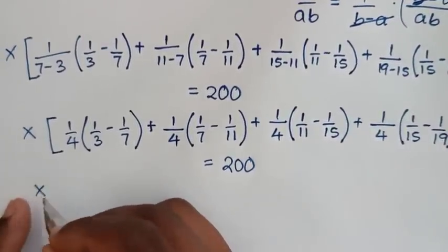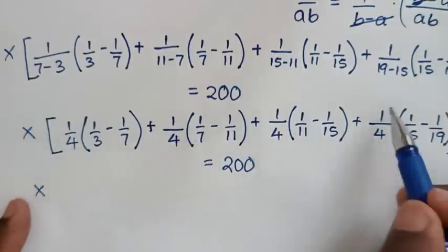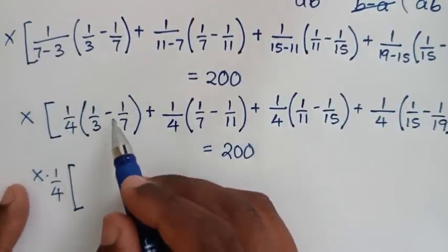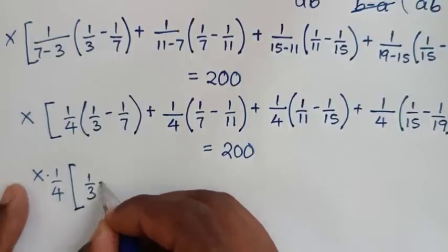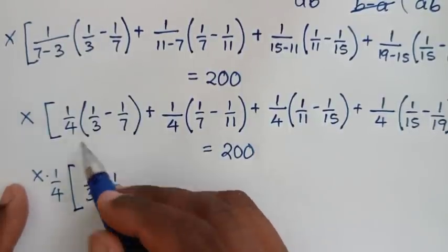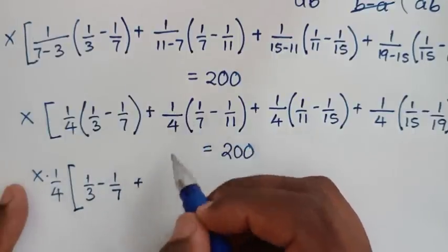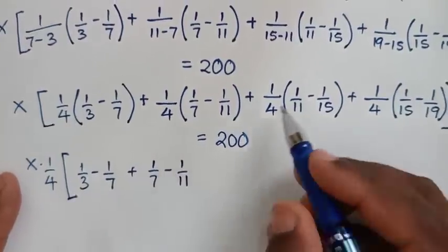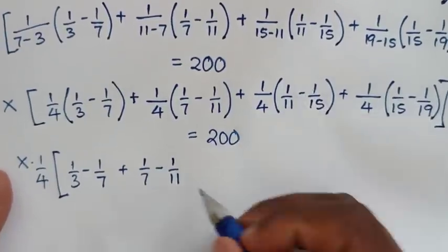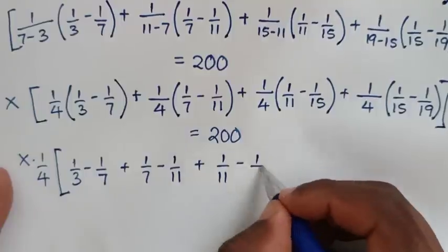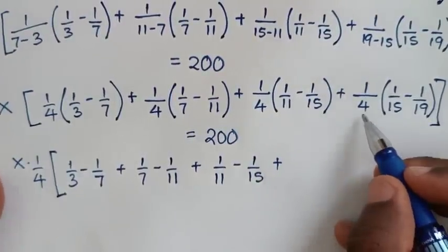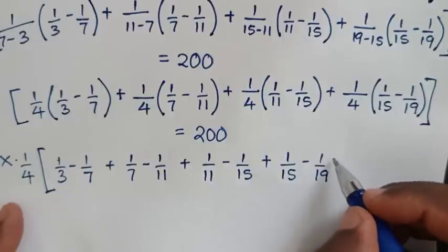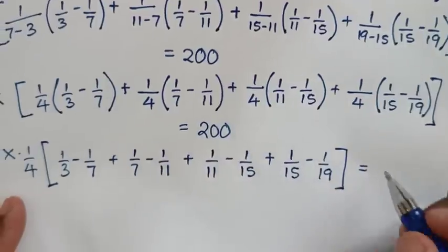In the next step, 1/4 is common throughout, so we take 1/4 out of the bracket. Inside we are left with: (1/3 minus 1/7) plus (1/7 minus 1/11) plus (1/11 minus 1/15) plus (1/15 minus 1/19), bracket equals 200.